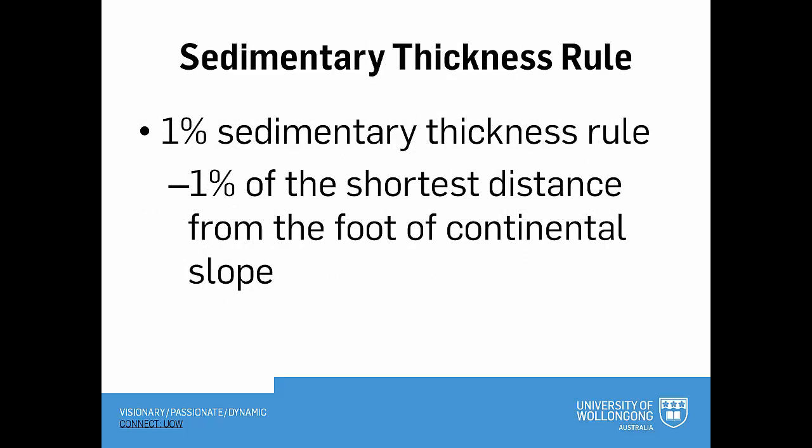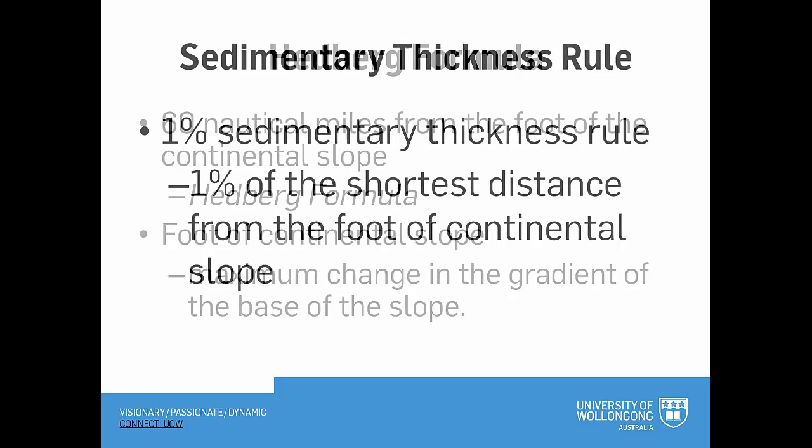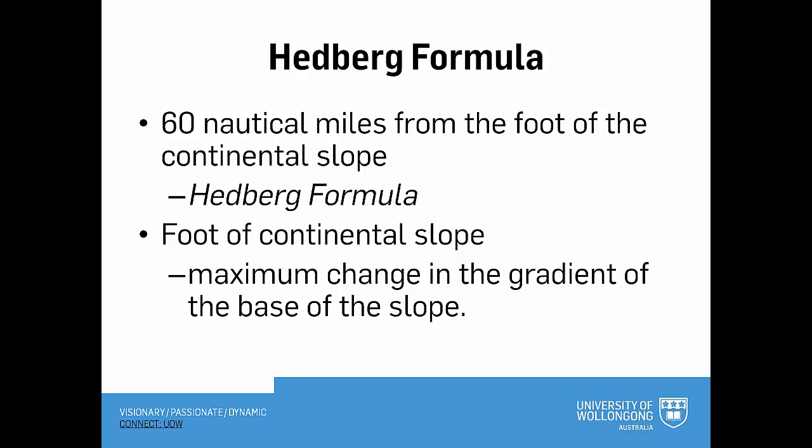The sediment thickness rule on the other hand is much more complicated and it requires a calculation based on a position known as the foot of the slope and the sediment thickness of the crust of the continental shelf. The second formula is based on the foot of the slope as well. This Hedberg formula is derived from calculating a foot of the slope point and then extending a further 60 nautical miles further out to sea. The foot of the continental slope is defined as the maximum change of gradient in the base of the slope as it drops down to the deep ocean, and this can best be illustrated in these diagrams.